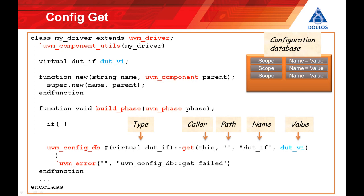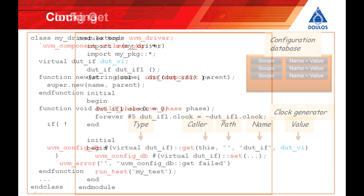The driver tries to grab the virtual interface from the configuration database. The get call can succeed or fail — it's a function that returns a bit value, 0 or 1. We call get within an if statement: if it fails and returns 0, we use the standard UVM error reporting macro uvm_error to write out an error message. The benefit of using the standard reporting mechanism is that it's easy to intercept this error message afterward and do something special with it, like demoting it to a warning or writing it to a separate file.